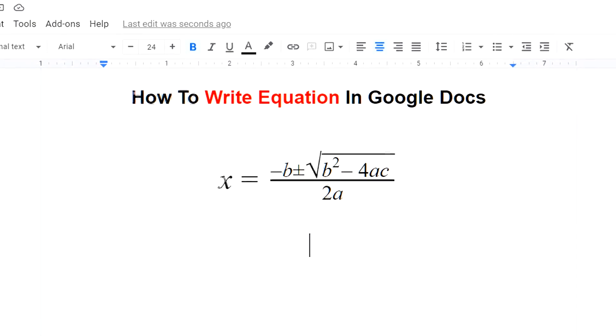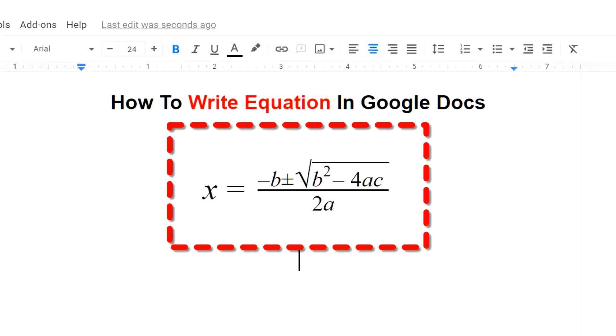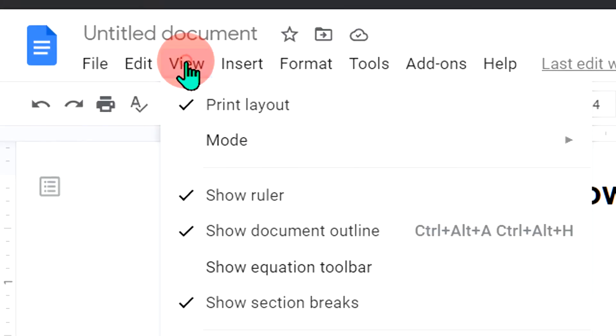In this video I will show you how to write equations in Google Docs using the equation editor like this. It's very easy. Keep watching. To write an equation, first you need to go to the View option and click on Show.